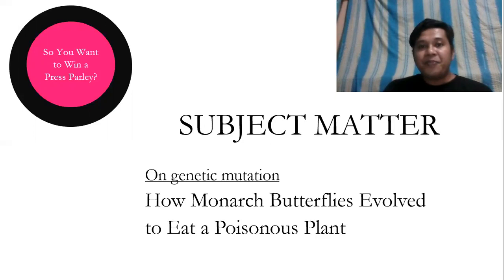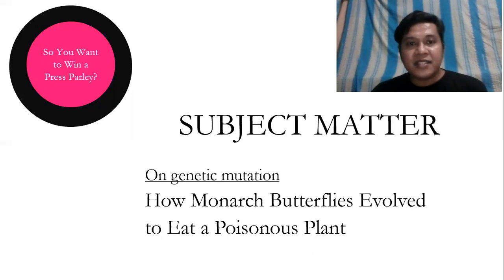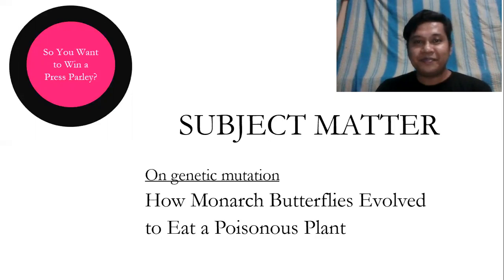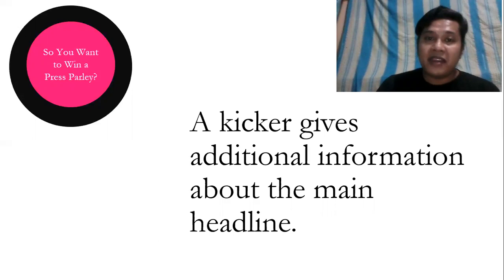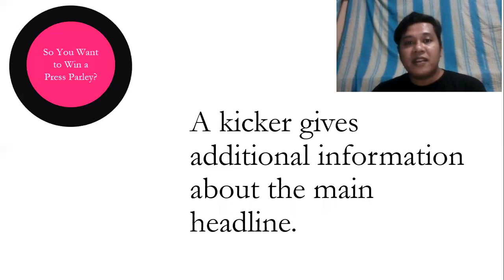The kicker may also be the subject matter itself. For example, you have the main headline: 'How monarch butterflies evolved to eat a poisonous plant,' and this story has something to do with genetic mutation, so the kicker is on genetic mutation. Remember that the kicker gives additional information about the main headline — this additional information may be in the form of a highlight, its significance, or simply the subject matter itself.